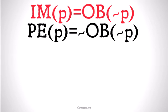Permissible, we're going to define as it's not the case that it's obligatory that not P. Permissible that P, if something is allowed, it's okay to do, that means it's not the case that it's impermissible, or it's not the case that it's obligatory that you don't do that thing.